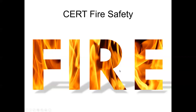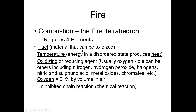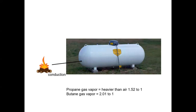This is the fire safety segment of CERT training — an abbreviated refresher, not starting from scratch. Combustion is a four-element operation: you need fuel, temperature, an oxidizing agent (usually oxygen, about 21% of air), and the uninhibited chain reaction — a chemical reaction that produces free radicals of oxygen and hydrogen, which continues the combustion.